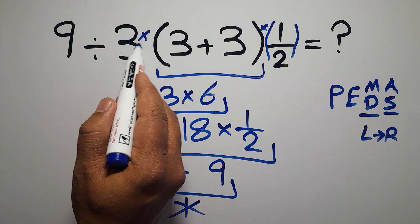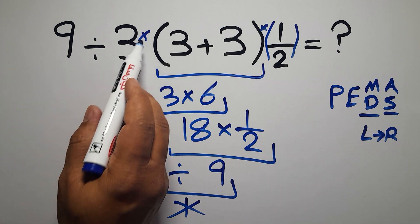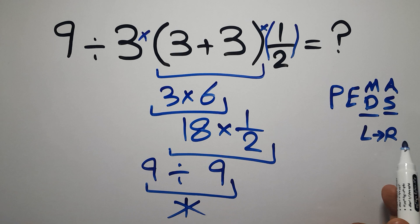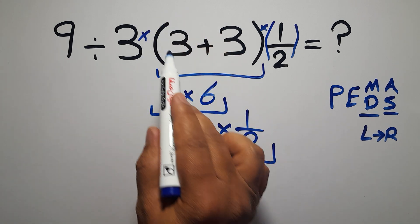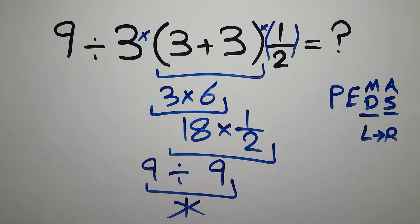If you do this multiplication before this division, it is wrong, because multiplication and division have equal priority, and we have to work from left to right. So, first, this parentheses. Inside this parentheses, we have 3 plus 3, which gives us 6.